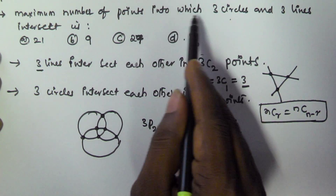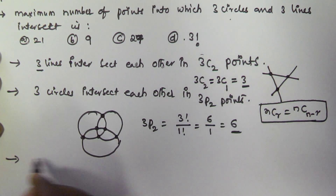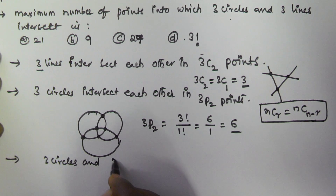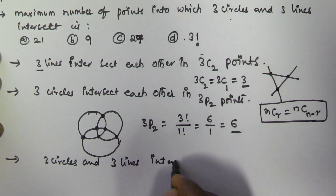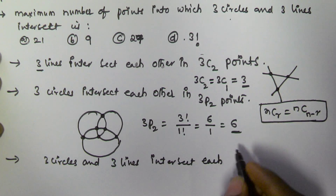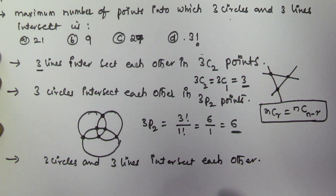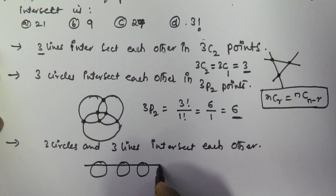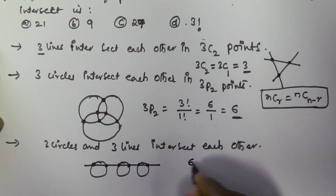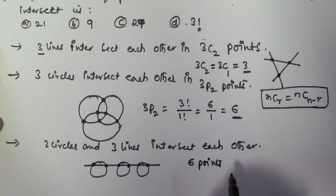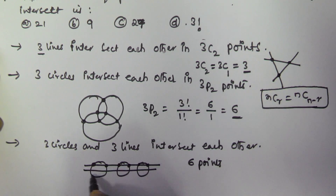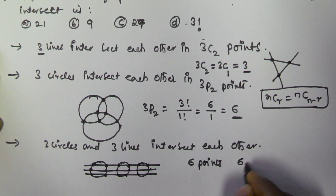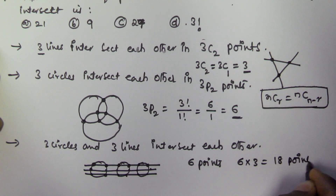Now we will find the maximum number of points into which three circles and three lines intersect each other. If there are three circles and one line is drawn, it will make 6 points — 1, 2, 3, 4, 5, 6 per line. So if there are three lines, they will make 18 points total. That means 6 into 3 equals 18 points.